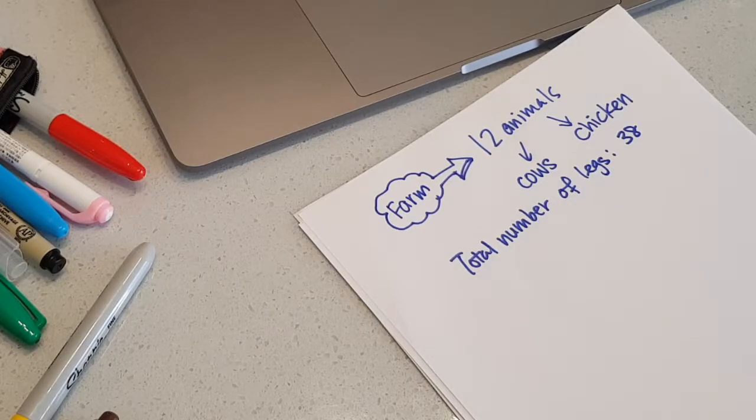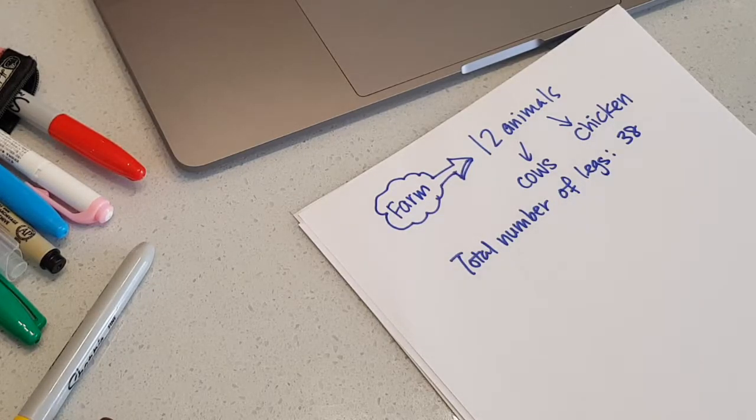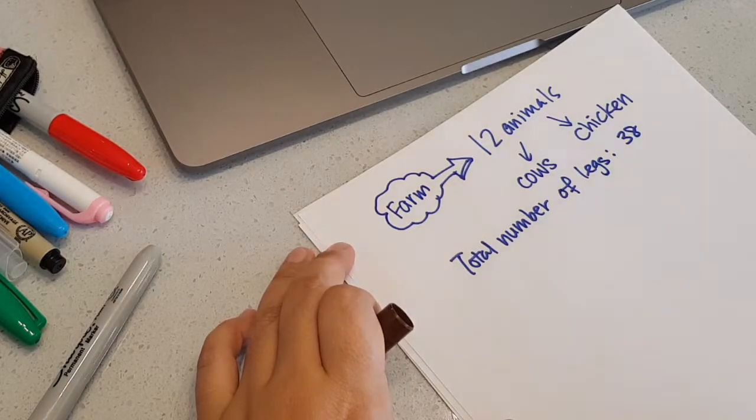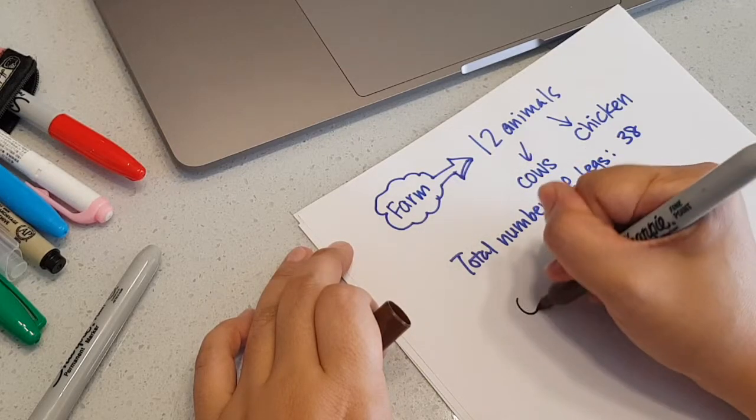There are 12 animals. Remember the first time we do supposition, we suppose all are motorcycles. If you watch my first video, you will see that I suppose all are motorcycles, multiply by two, take the difference, and divide by two. This whole thing may sound very complicated for a middle memory child, so I'm going to make use of drawing to help them understand supposition. I have 12 animals, so I'm going to draw 12 circles.